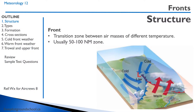The definition of a front is the transition zone between two different air masses at a different temperature. This transition zone is typically about 50 to 100 nautical miles in distance.